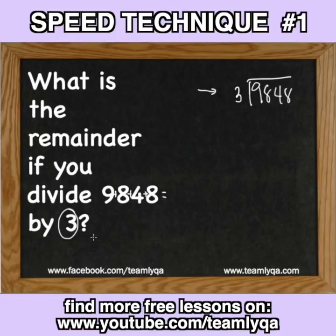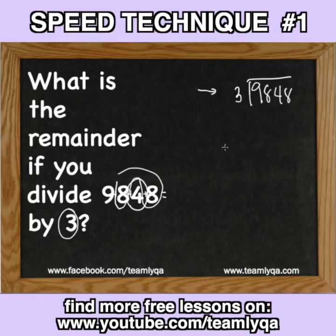Which brings us to this quicker option. Just add everything. Now, by chunking — this is something that I also taught in a video — this is 16 plus 4, that is 20, 29.